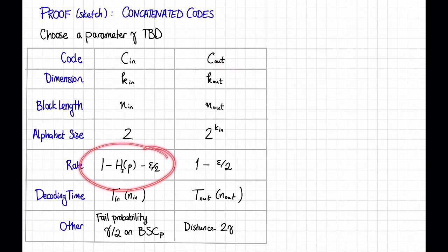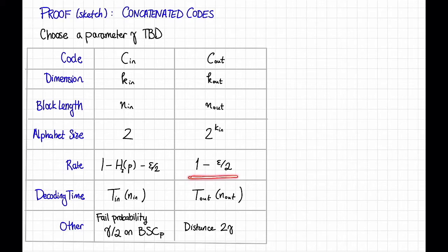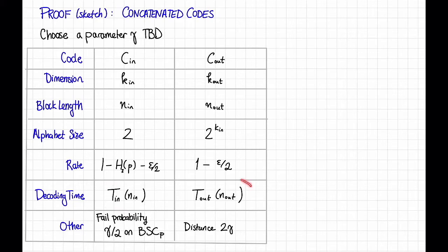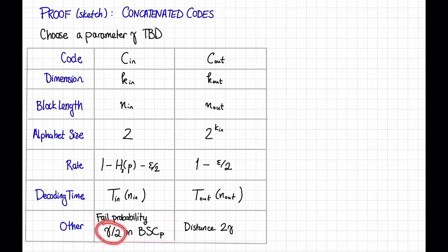The rate of the inner code is going to be basically capacity-achieving — 1 minus the binary entropy of p minus a smidge. The rate of the outer code is going to be really close to 1, namely 1 minus epsilon over 2. The inner code is going to be decodable in time T_in, and the outer code C_out will have decoding time T_out. I want the failure probability on the BSC of C_in to be gamma over 2, and I want C_out to have distance 2 times gamma.